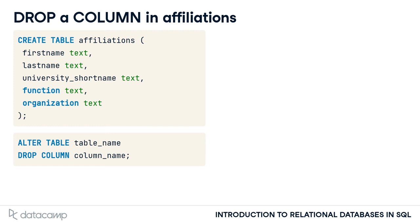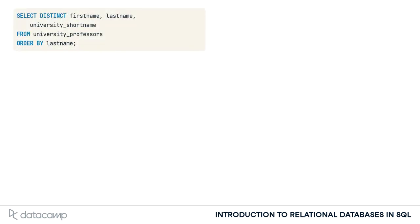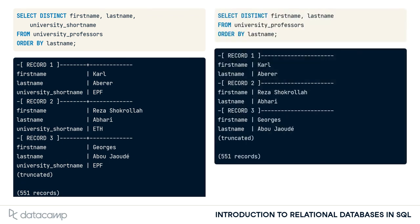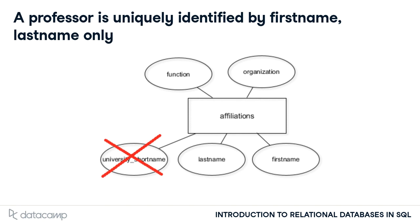But why is it an error in the first place? I queried the university professors table and saw that there are 551 unique combinations of first names, last names, and associated universities. I then queried the table again and only looked for unique combinations of first and last names. Turns out, this is also 551 records. This means that the columns first_name and last_name uniquely identify a professor. So the university_short_name column is not needed in order to reference a professor in the affiliations table.